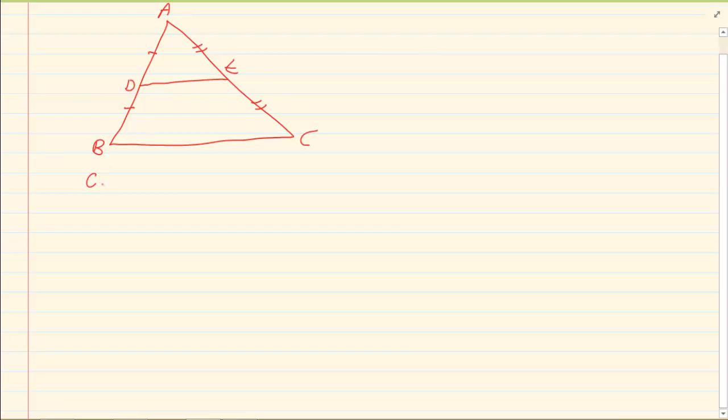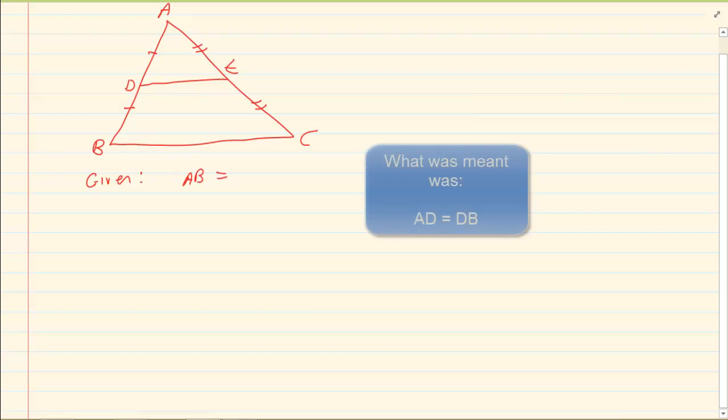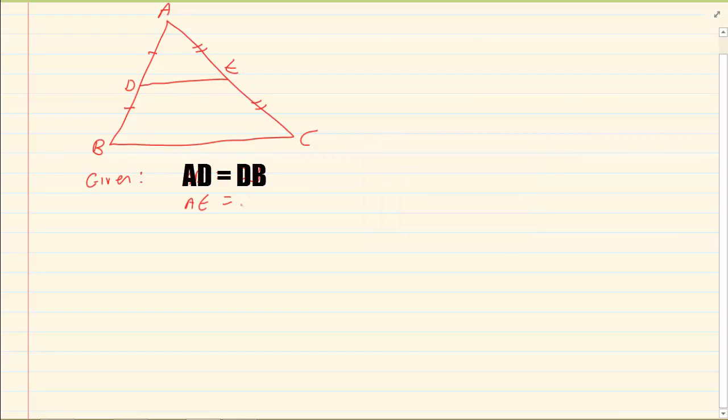So what is given is that the opposite sides are cut in half. So I have AB is equal to DB and then I have that AE is equal to EC.